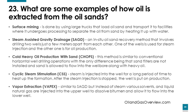Cyclic Steam Stimulation, or CSS: steam is injected into the well for a long period of time to heat up the formation. After steam injection is stopped, the oil is put on production. The last method is Vapor Extraction, or VAPEX — similar to SAGD, but instead of steam, various solvents and liquid gas are injected into the upper well to dissolve bitumen and allow it to flow into the lower producing well.